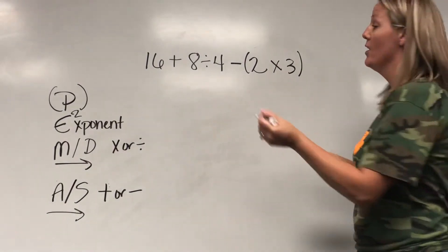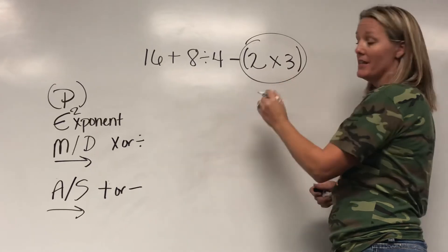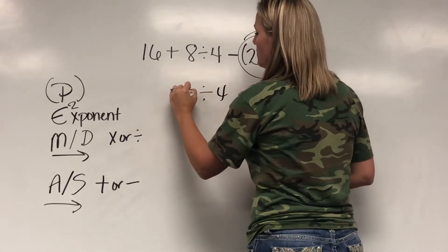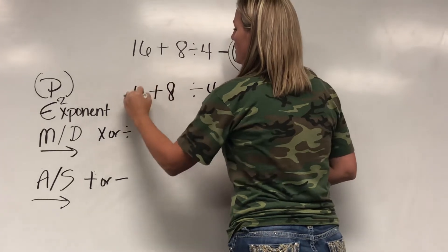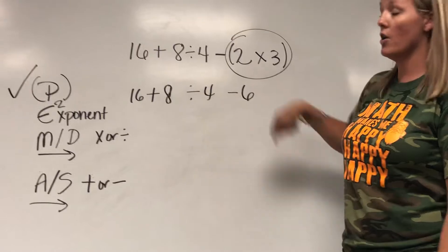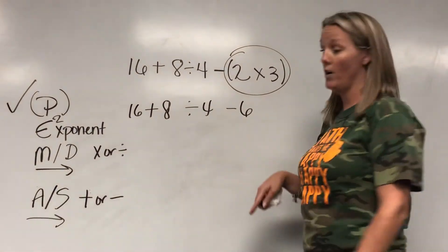I see parentheses. So I'm going to solve that portion first. Two times three is six. Now I still have a lot of this problem left. So I've done that step. The next step is exponents. Since there are no exponents in this problem, I move on to the next step.